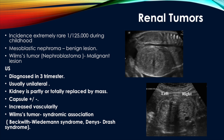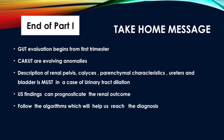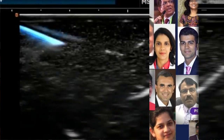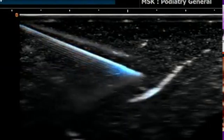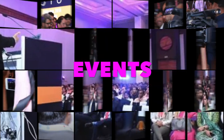In conclusion: GUT evaluation begins from the first trimester; CAKUT are evolving anomalies. Description of the renal pelvis, calyces, parenchymal characteristics, ureters, and bladder is essential in a case of urinary tract dilatation. Ultrasound findings can prognosticate the general outcome. Follow the algorithms which will help us reach the diagnosis. Thank you very much.